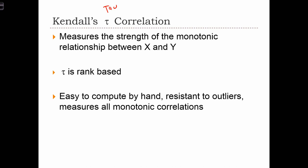So Kendall's Tau measures the strength of the monotonic relationship between X and Y, and just like Spearman's rank statistic, Tau is also rank-based. Tau's statistic is easy to compute by hand, and is considered to be more resistant to outliers than Spearman's statistic. It also measures monotonic correlations that can be linear or nonlinear.